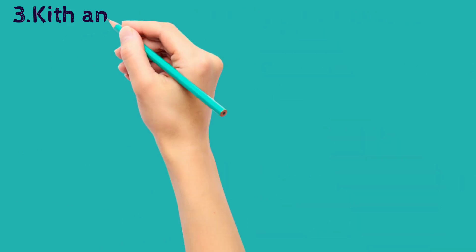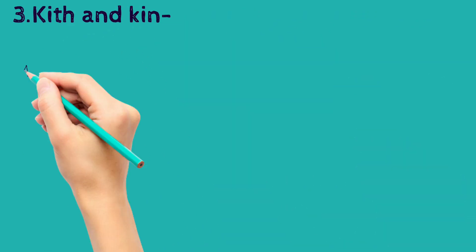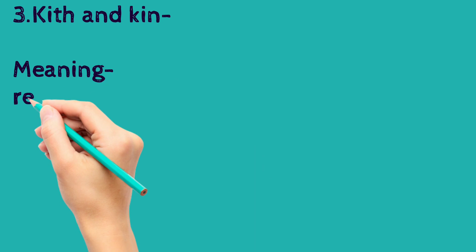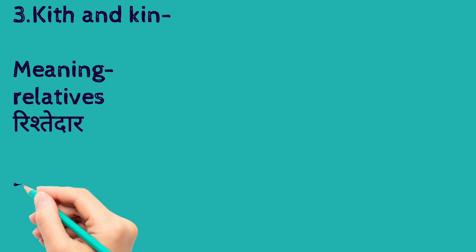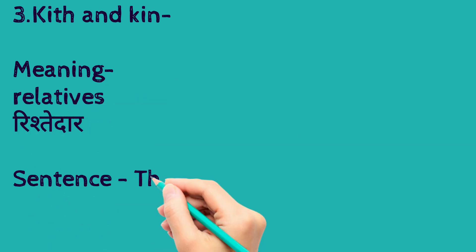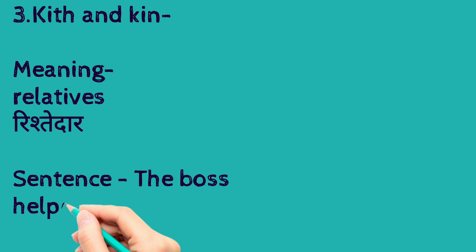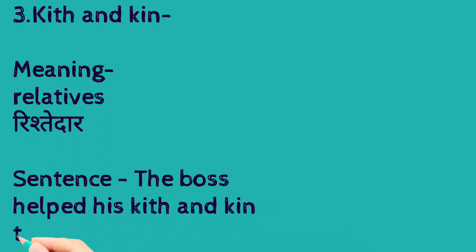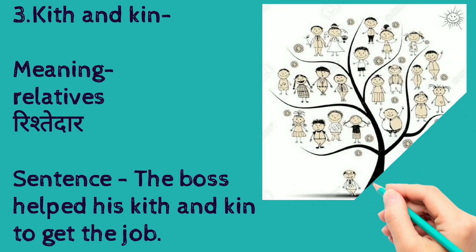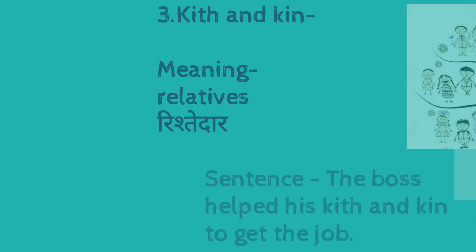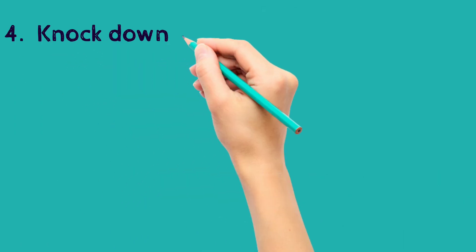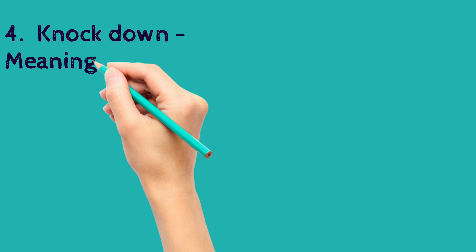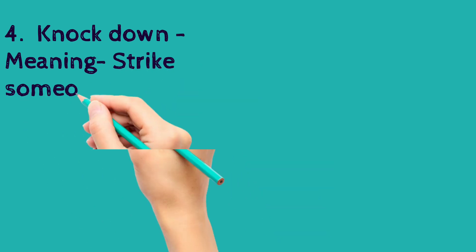The third one is 'kith and kin'. The meaning of kith and kin is relatives. The sentence is: the boss helped his kith and kin to get the job. So the meaning is relatives.